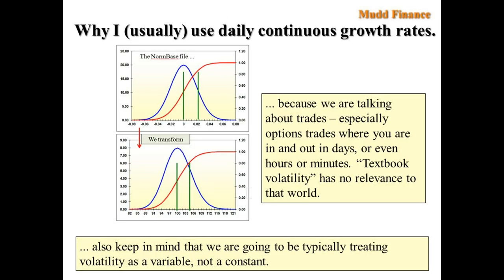Now, in this class, we'll normally be using daily continuous growth rates as a measure of daily estimated volatility because here we're talking about making option trades where you're in and out in days or even hours or minutes. And so, the standard textbook definition of annual volatility has almost no relevance to that world. And we're also going to be treating volatility as a variable rather than a constant in this class, and it makes it a little easier to do that when you're talking about short periods of time, like a day compared to a year. So, this slide set was maybe a little long-winded and maybe went into a little too much detail, but I want to make sure that you understand exactly why we're using log growth rates instead of other proxies for our volatility estimators in this class. And I guess by now, you hopefully understand that.